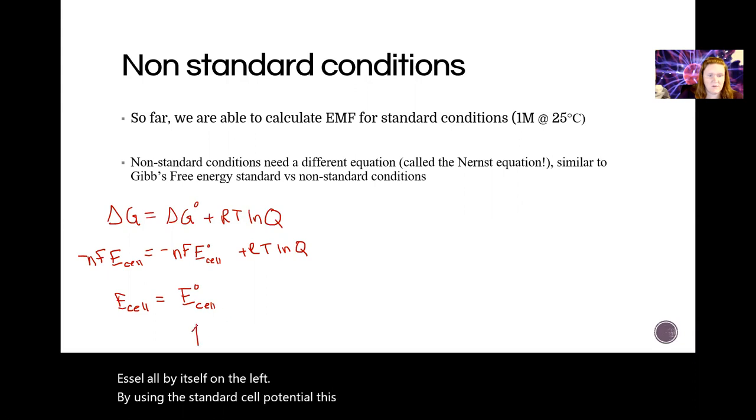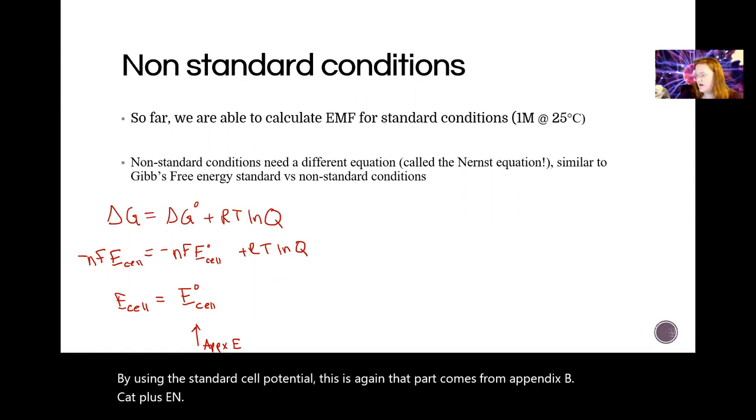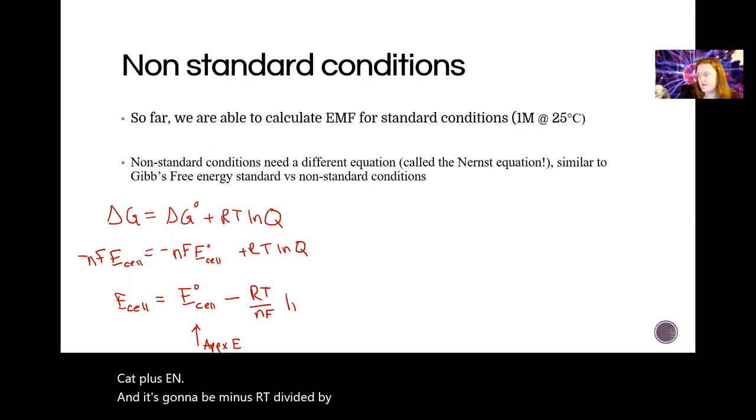this delta G can also be defined as NF E, but not under standard conditions. So I'm not going to write the little circle thing. So then to rearrange it, I want to solve E cell all by itself on the left by using the standard cell potential. This is, again,